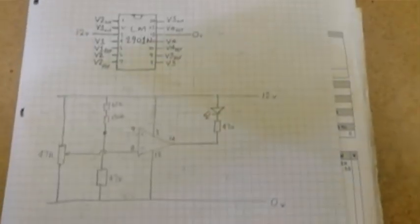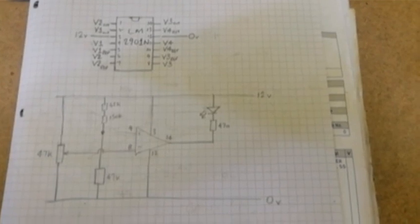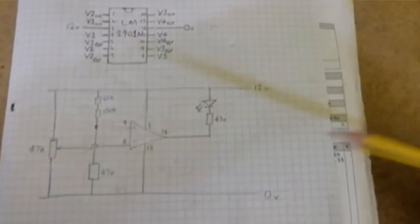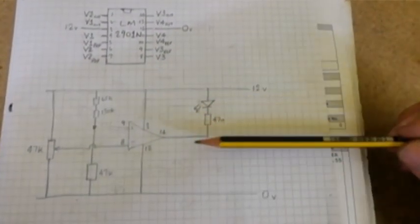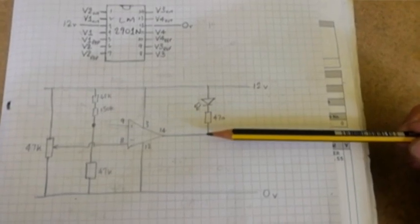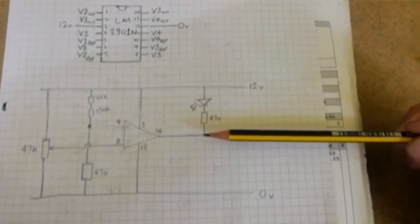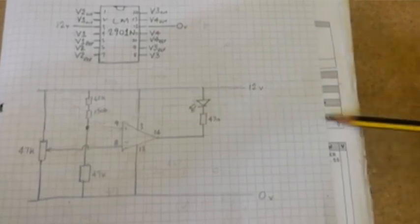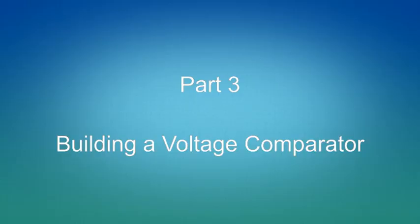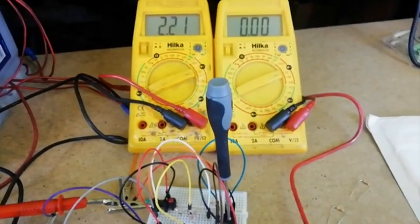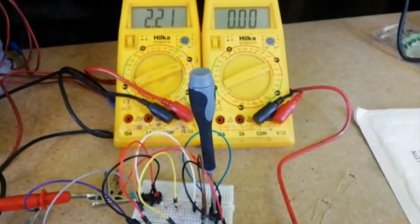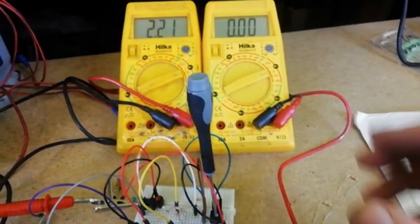But I want the circuit to work the other way around. I want the LED to be off when it's above 2.2 volts and on when it's below 2.2. Currently, below 2.2 volts the LED's off, above 2.2 volts the LED's on.